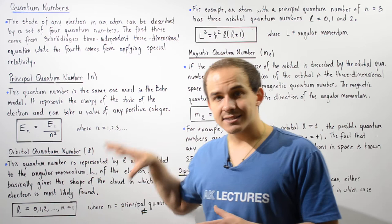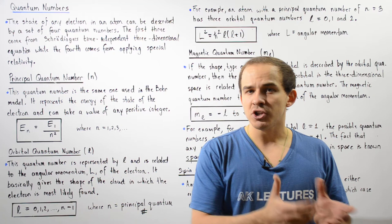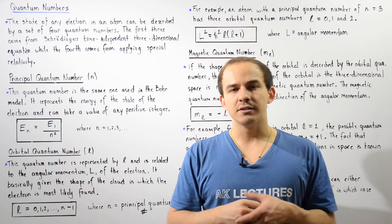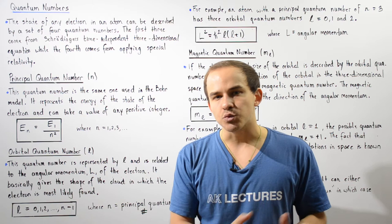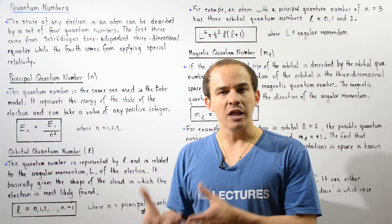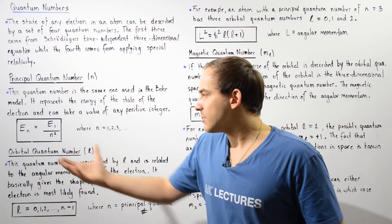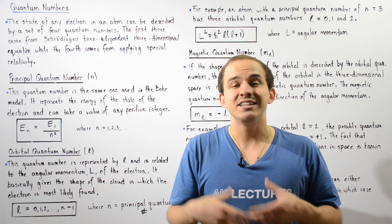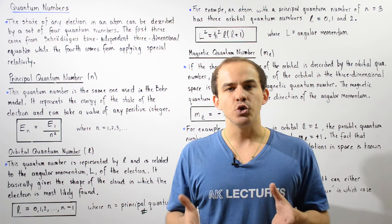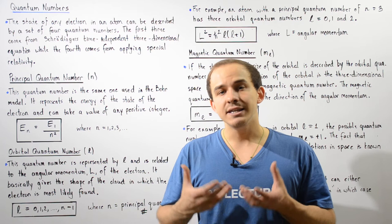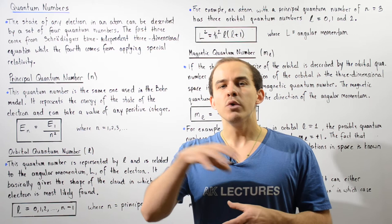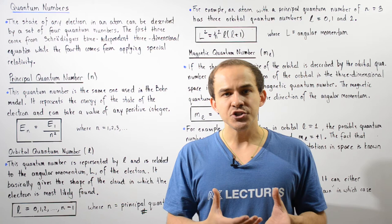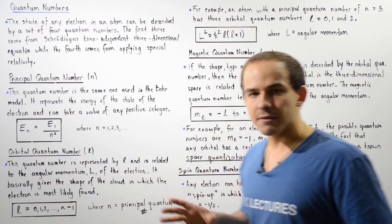The second quantum number is known as the azimuthal quantum number or the orbital quantum number, given by lowercase l. The orbital quantum number is related to the angular momentum, given by uppercase L, of the electron within that atom. The orbital quantum number describes the shape and the size of the orbit — the electron cloud produced by that electron. The electron cloud gives us the most probable location of our electron within our atom.